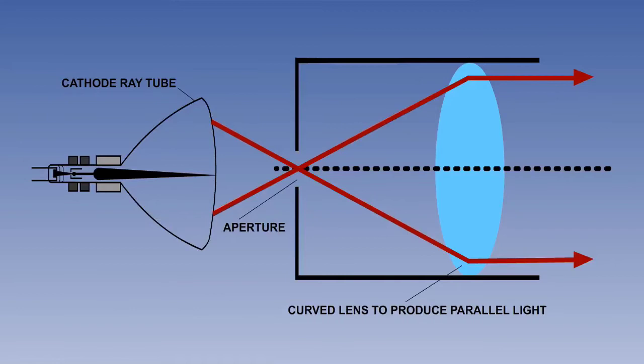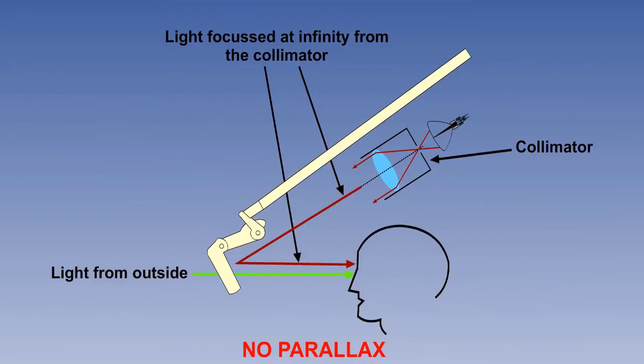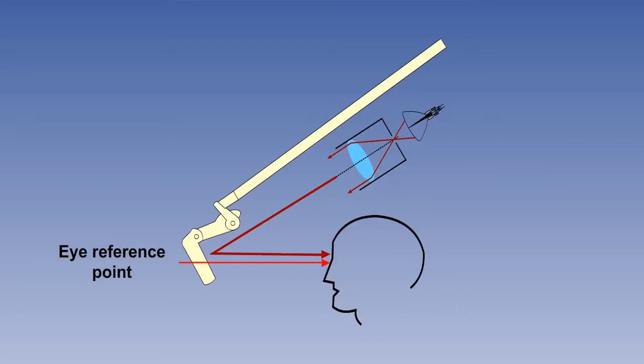A secondary advantage is that there is no parallax. Parallax on normal instruments is simply caused by viewing the instrument from slightly to one side instead of from the front. Because the light path from the combiner is so directional, it is important that it is correctly positioned to meet the pilot's eyes. The ideal position for the image to meet the eye is called the eye reference point.